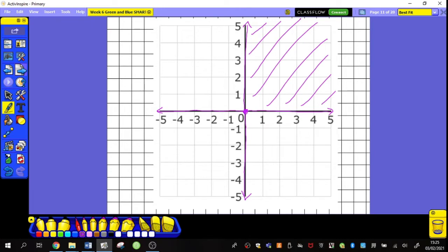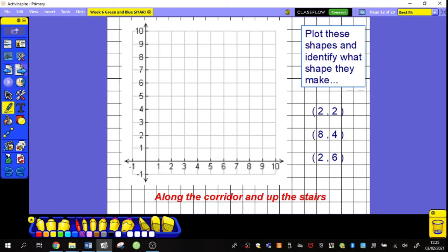So we're going to be focusing just on the positives today. Plot these shapes and identify what shape they make. Now, when plotting coordinates, I always remember the phrase, along the corridor and up the stairs. That just links to my x-axis, which is the one that goes across. Get it? X across. And the one going up, I label Y. So I might be referring to my coordinates as X and Y. That is how coordinates are written. Now, along the corridor refers to always the first digit or first number, the X one.